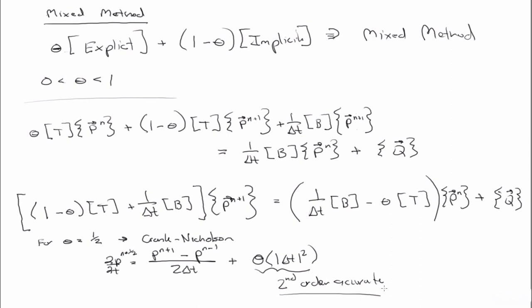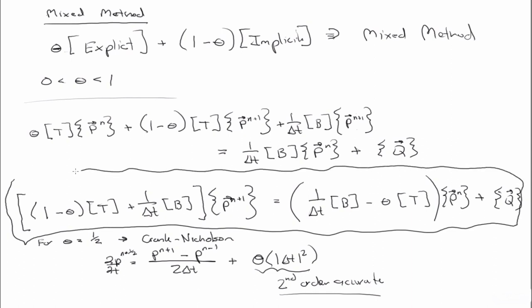But we were limited to first order discretization error in time. Now with this mixed method to the Crank-Nicholson method, we have a second order accurate in time as well. So again, this is the final form of the mixed method.